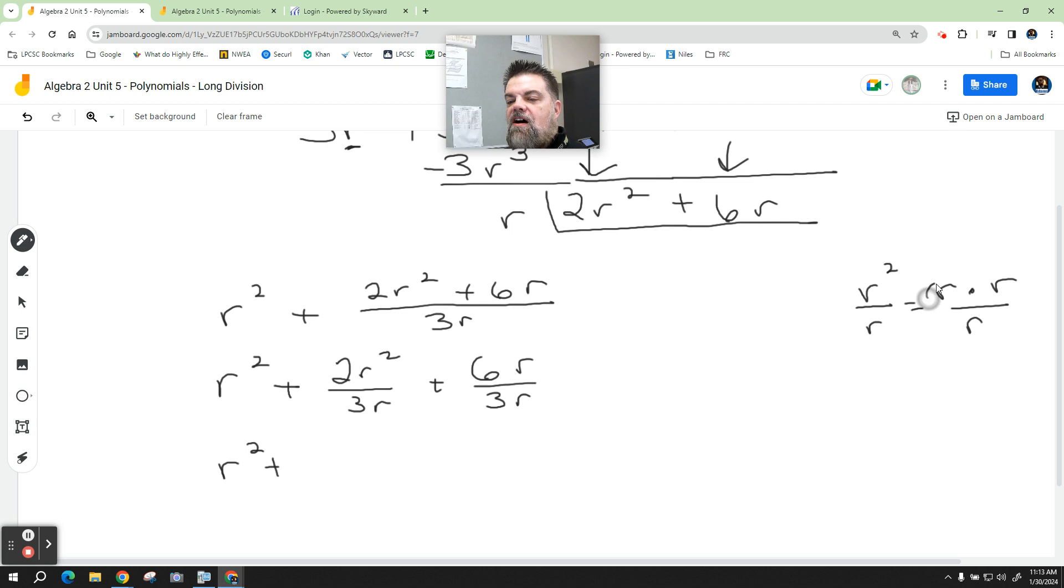What is r divided by r? One, right? What's one times r? r. So this remains two over three, but the r is reduced down to just one r.